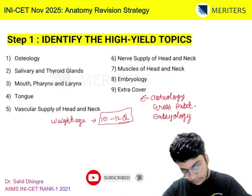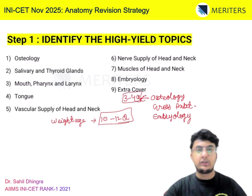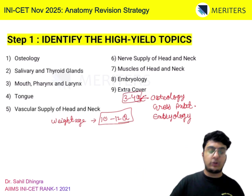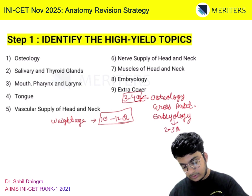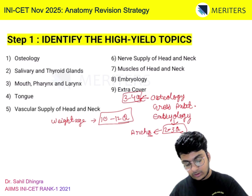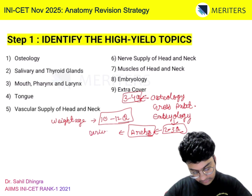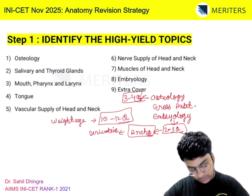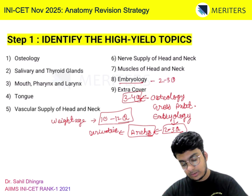Around 3 to 4 questions will definitely be from Osteology — that is your bones. From Embryology, they will ask 2 to 3 questions. The most important topics in Embryology are pharyngeal arches; they will ask you the derivatives of each arch, and from basic Embryology and Development you can expect 2 to 3 questions in INICET.